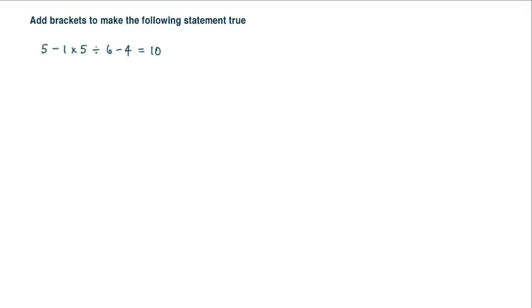In this question we're asked to add brackets to make the following statement true. When we look at this statement we see we've got multiplication and division, and it doesn't make sense to add brackets around these terms. What we're ideally looking for is to add brackets around where we've got positives or negatives.